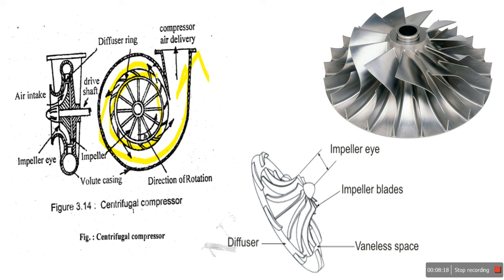To repeat the working: a centrifugal compressor consists of a rotating member known as the impeller, which has a number of blades and is mounted on the compressor shaft inside a stationary volute casing. As the impeller rotates, the pressure at the center region falls and air enters the eye of the impeller — air actually enters due to centrifugal force.